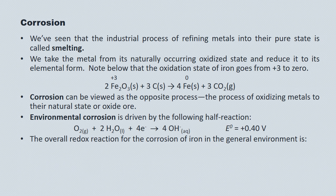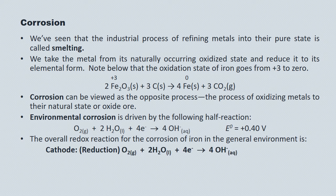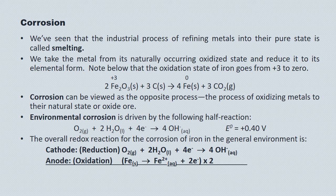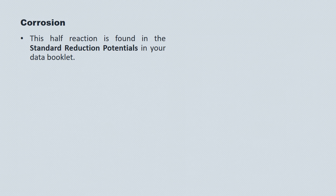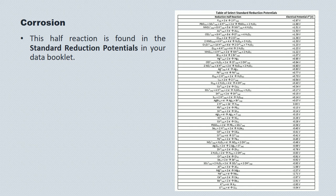The overall redox reaction for the corrosion of iron in the general atmosphere looks like this. At the cathode, oxygen and water are reacting to form hydroxide. And at the anode, iron is being oxidized to the iron-2-ion. The net redox reaction looks like this. This environmental oxidizer half reaction is found in your standard reduction potentials table in your data booklet, and the reaction is right here at positive 0.40 volts.